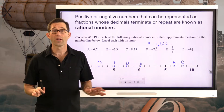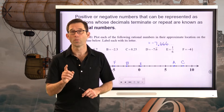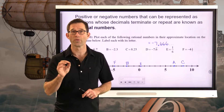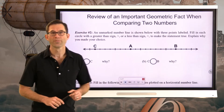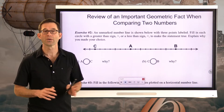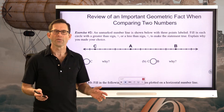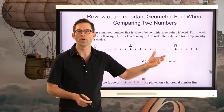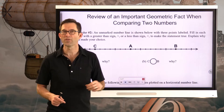Before we move on, it is absolutely critical that you can do this — primarily because we want to be able to think about number lines when comparing numbers in terms of greater than or less than. Exercise 2: an unmarked number line is shown with three points labeled. Fill in each circle with a greater than or less than sign to make the statement true and explain why you made your choice. You might say this is unfair — there are no numbers! How can I compare A to B to C if I don't know what they are?